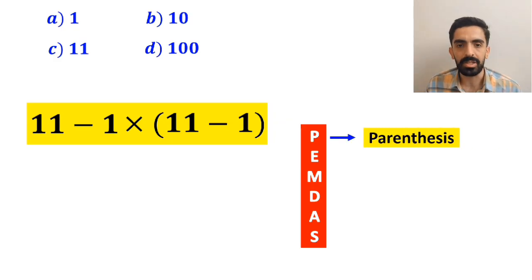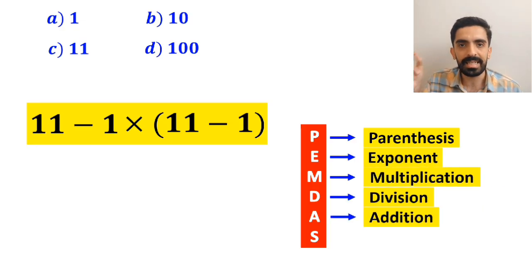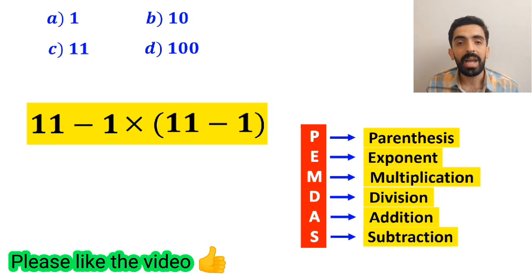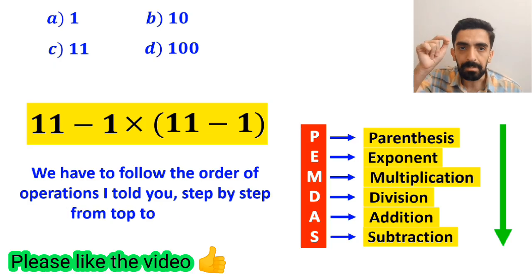In this rule, P stands for parenthesis, E for exponent, M for multiplication, D for division, A for addition, and S for subtraction. We have to follow the order of operations step by step from top to bottom.